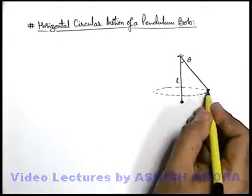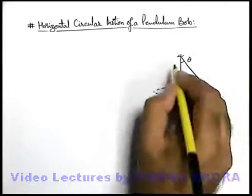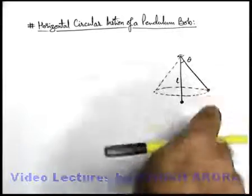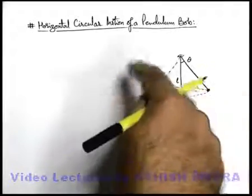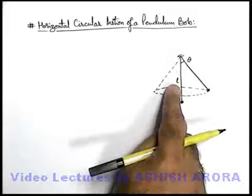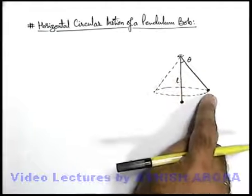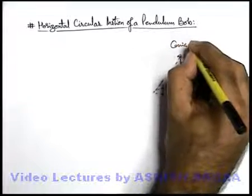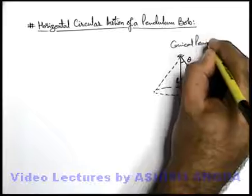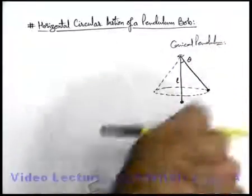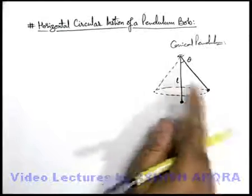And in this situation, when the bob will be revolving in the horizontal circle, you can see the string of this pendulum will circulate in the fashion of a cone. And this type of pendulum or this type of motion of pendulum we term as conical pendulum. This is termed as conical pendulum because the string is circulating in such a manner it is describing a cone.